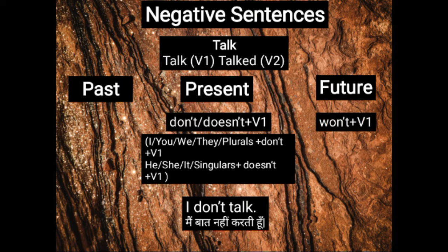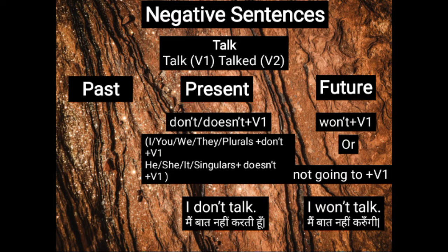In the future tense, we use WON'T, which is the contracted form of WILL NOT. WON'T plus V1 will make your negative future tense sentence. You can also use NOT GOING TO plus V1 — that's up to you. For example, I WON'T TALK, which means MAIN BAAT NAHIN KARUNGI.